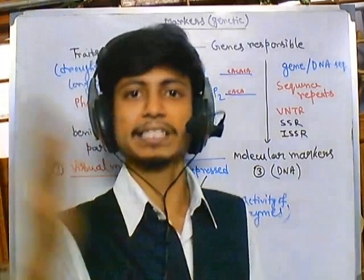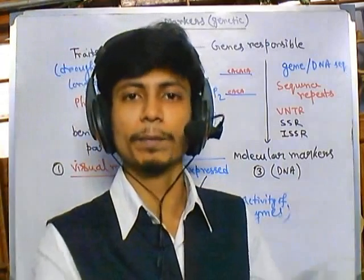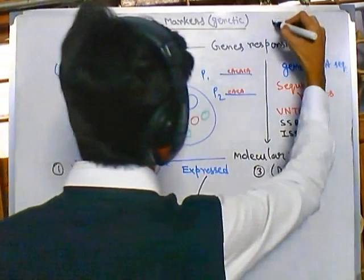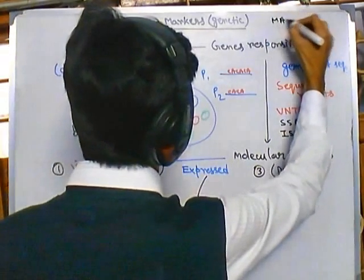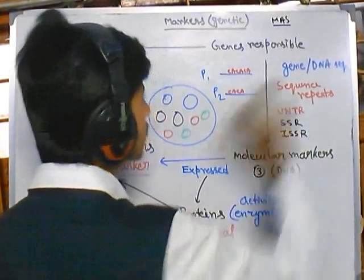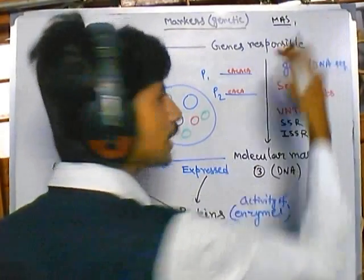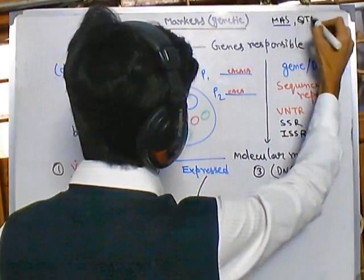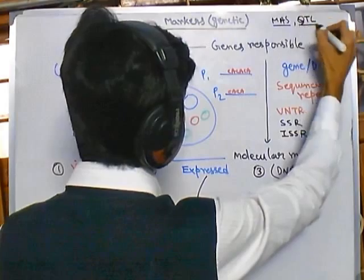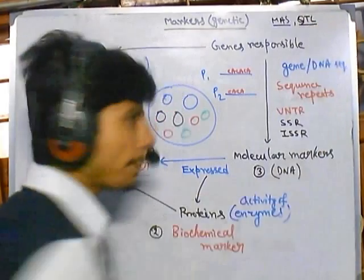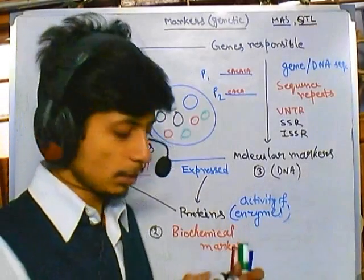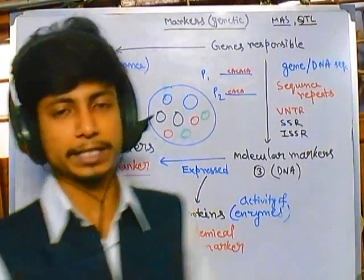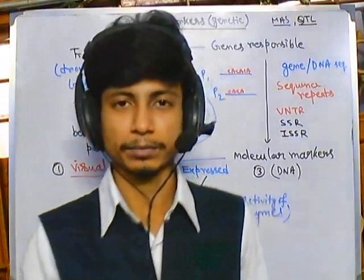These are the utilizations of markers. Using these markers we simply use marker assisted selection for plant breeding, also called MAS. Using the data from MAS we can also go for QTL — quantitative trait loci — mapping. Those topics will be covered later. That's it, I hope that's helpful, thank you.